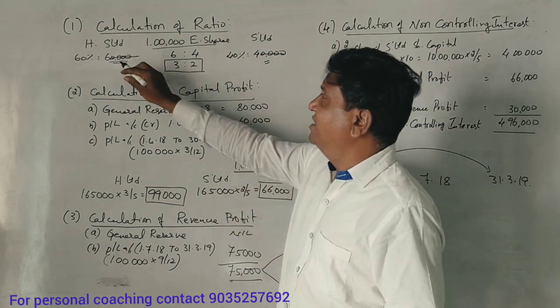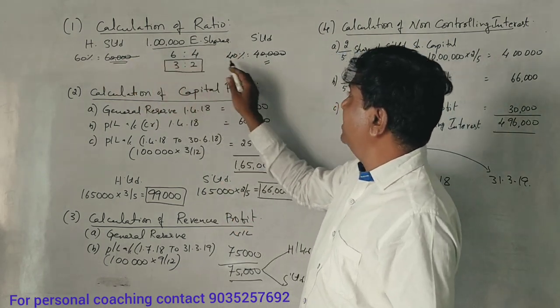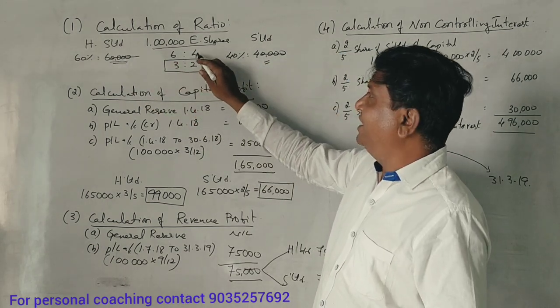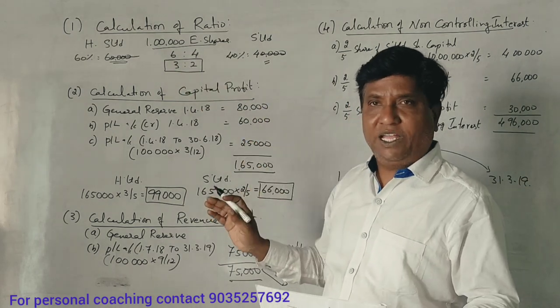So it will be 60,000 is to 40,000, and 4 zeros will cancel. It will be 6,000 is to 4,000, so it will be 3,000 is to 2,000. That is the first step.